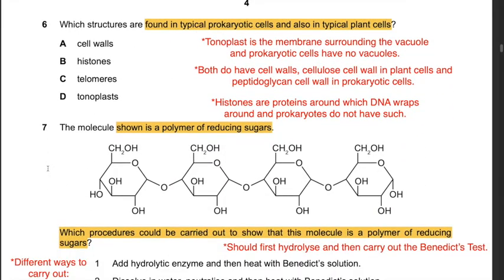Question 6: Which structures are found in typical prokaryotic cells and also in typical plant cells? The most obvious answer is A, cell walls, as both prokaryotic cells and typical plant cells have cell walls. The substance making the cell walls differs: in prokaryotic cells it is peptidoglycan, whereas in plant cells it is cellulose. However, cell walls are present in both. Hence the answer is A.